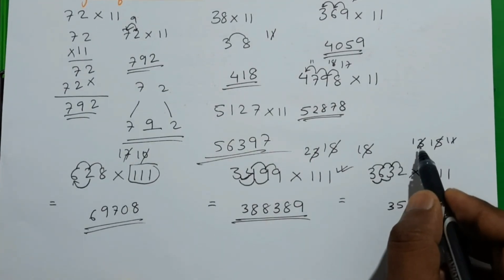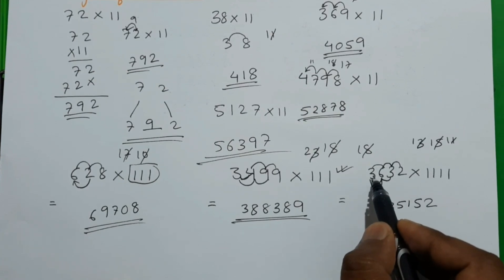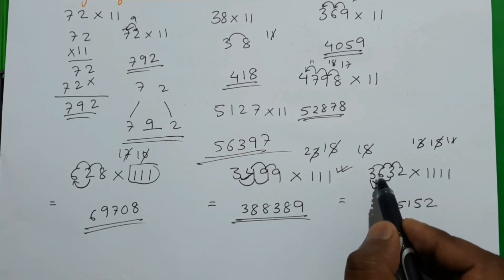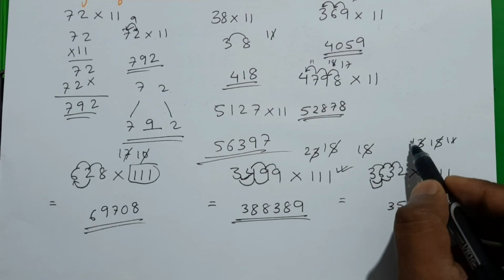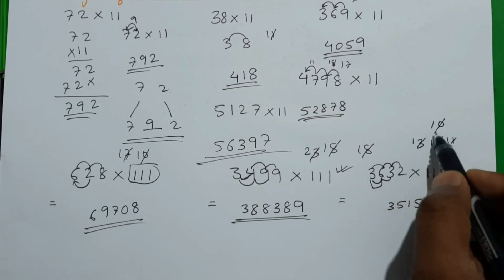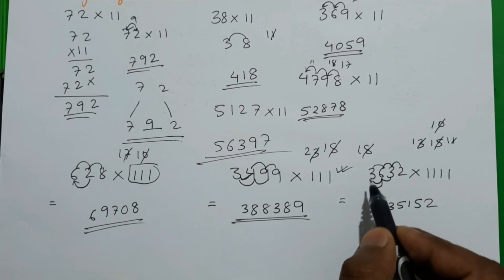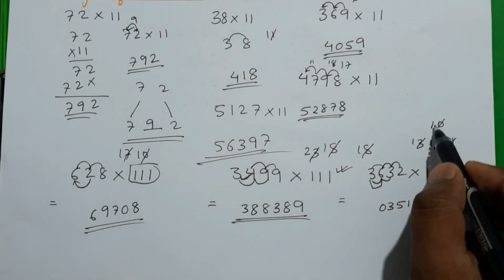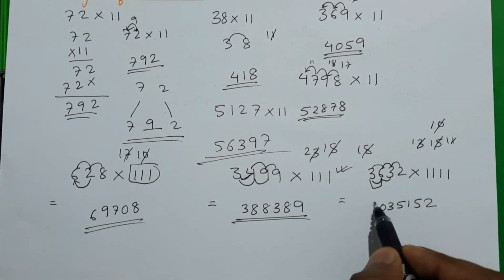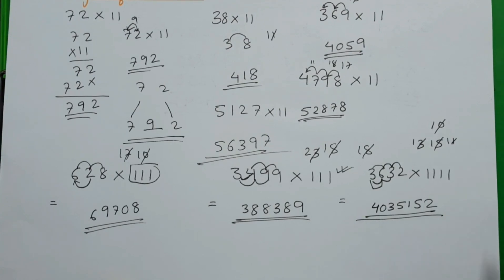Continuing: 6 plus 3 is 9, plus 1 is 10 — write 0, carry 1. Finally 3 plus 1 is 4. So our product for 3632 × 1111 is 4034032.